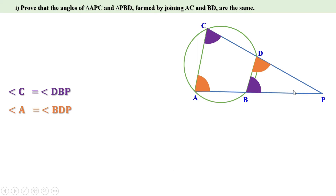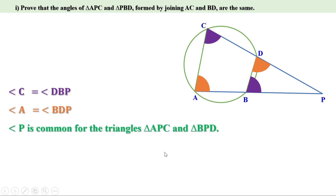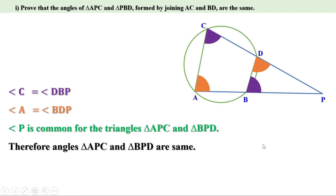Now, look at triangle APC and triangle PBD. Angle P is common for both the triangles. That means the three angles of triangle APC are equal to the three angles of triangle PBD. Or, the angles of these two triangles are same or equal.